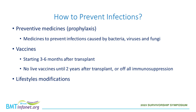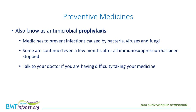So now we know infections happen after transplant — what can we do to prevent them? There are three main strategies: medicines, vaccines, and lifestyle modifications. Antimicrobial prophylaxis includes antibiotics, antifungals, and antivirals used to prevent infections caused by bacteria, viruses, and fungi. Some of these may be continued even a few months after immune suppression has stopped and may be the last medicines you need after transplant. If you're having difficulty taking them, talk to your doctor — there may be alternatives or alternative schedules.